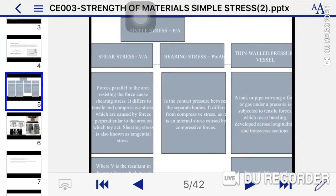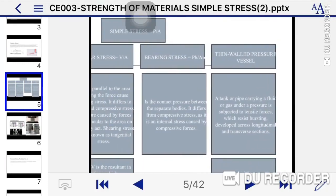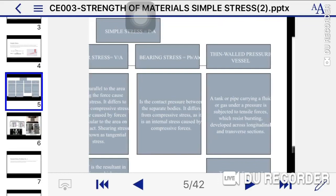The next type of stress is bearing stress. Bearing stress is the contact pressure between separate bodies. It differs from compressive stress as it is an internal stress caused by compressive forces. The formula is Pb divided by Ab.